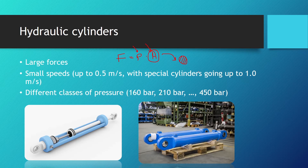Hydraulic cylinders are slow components. They move at small speeds — up to 0.5 meters per second, with special cylinders going up to 1 meter per second. Hydraulic cylinders are slower than pneumatic ones. There are various pressure classes that cylinders are built for, from 160 bars to 450 bars and even higher.